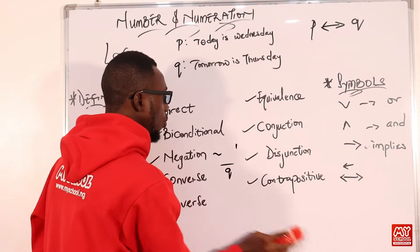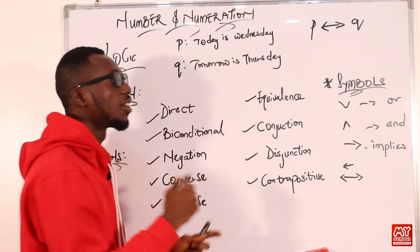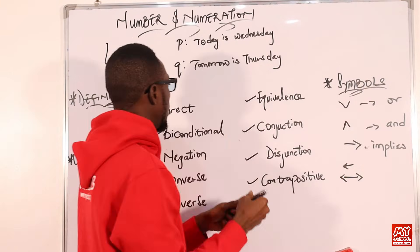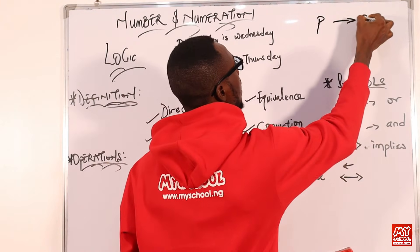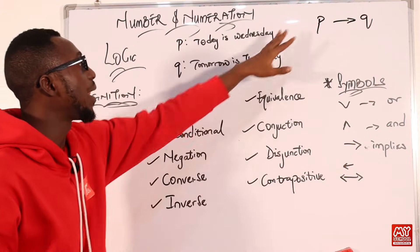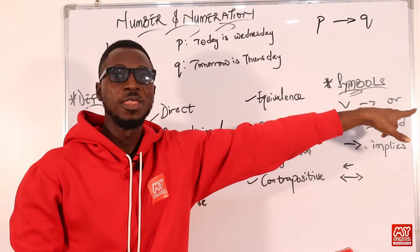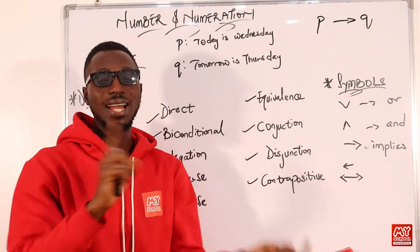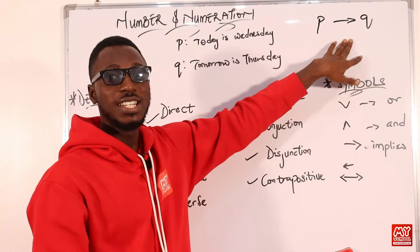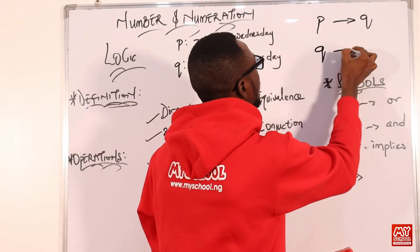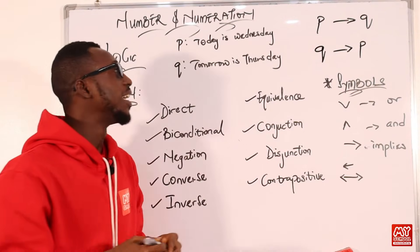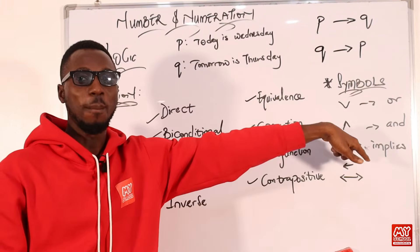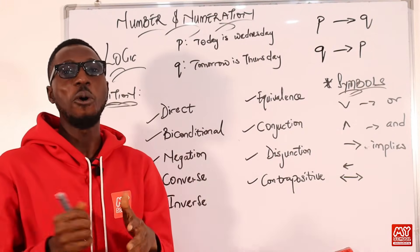Let's move to converse. When you talk about converse, it is like you are doing the flip side of the expression you have. I have statement P implies Q — if today is Wednesday, then tomorrow is Thursday. The converse means I switch the position of variables P and Q: when the first becomes the last and the last becomes the first. So the converse will be Q implies P — if tomorrow is Thursday, then today is Wednesday.